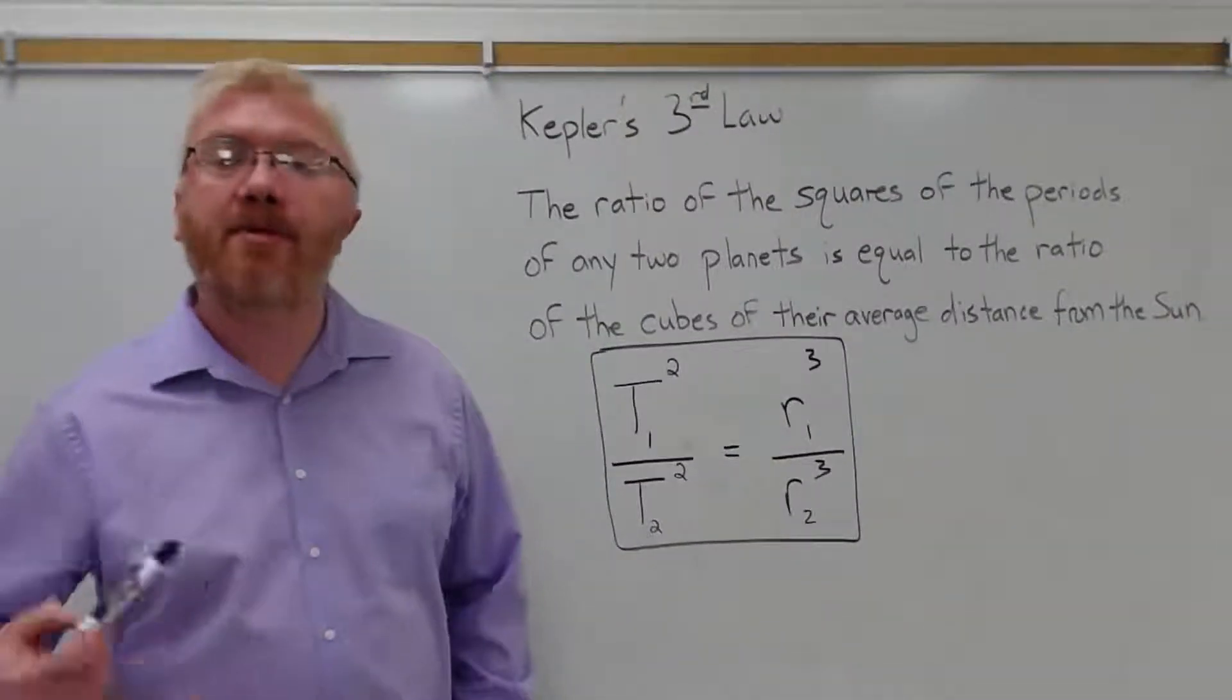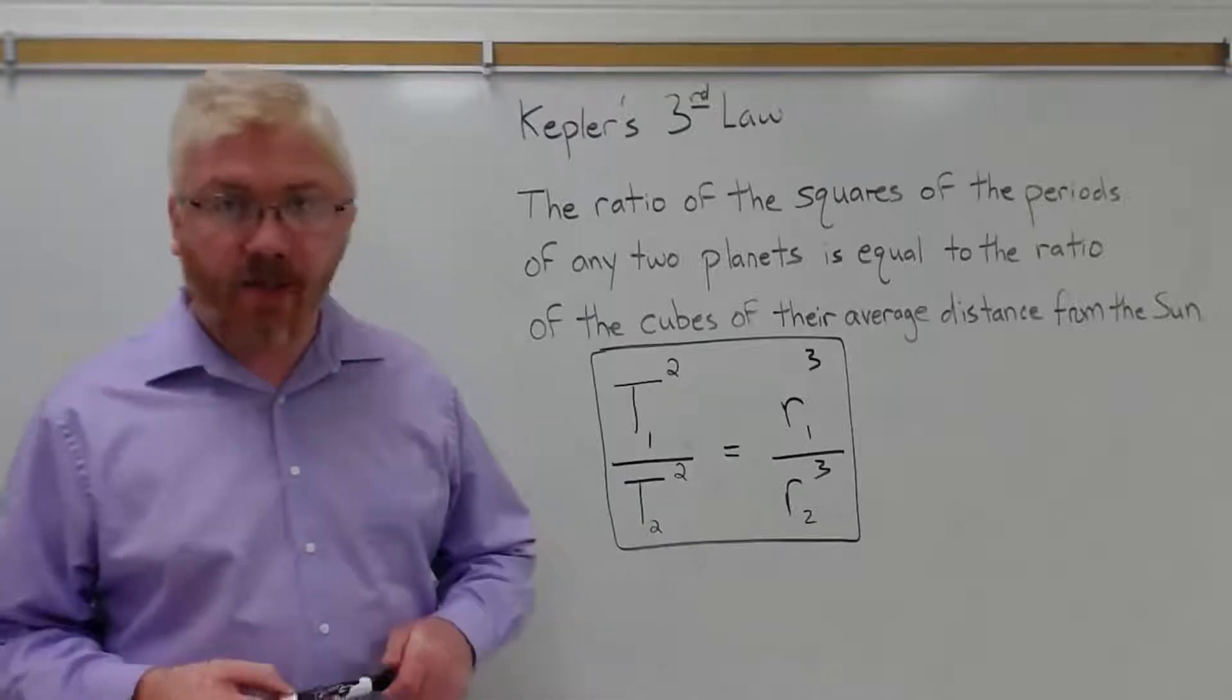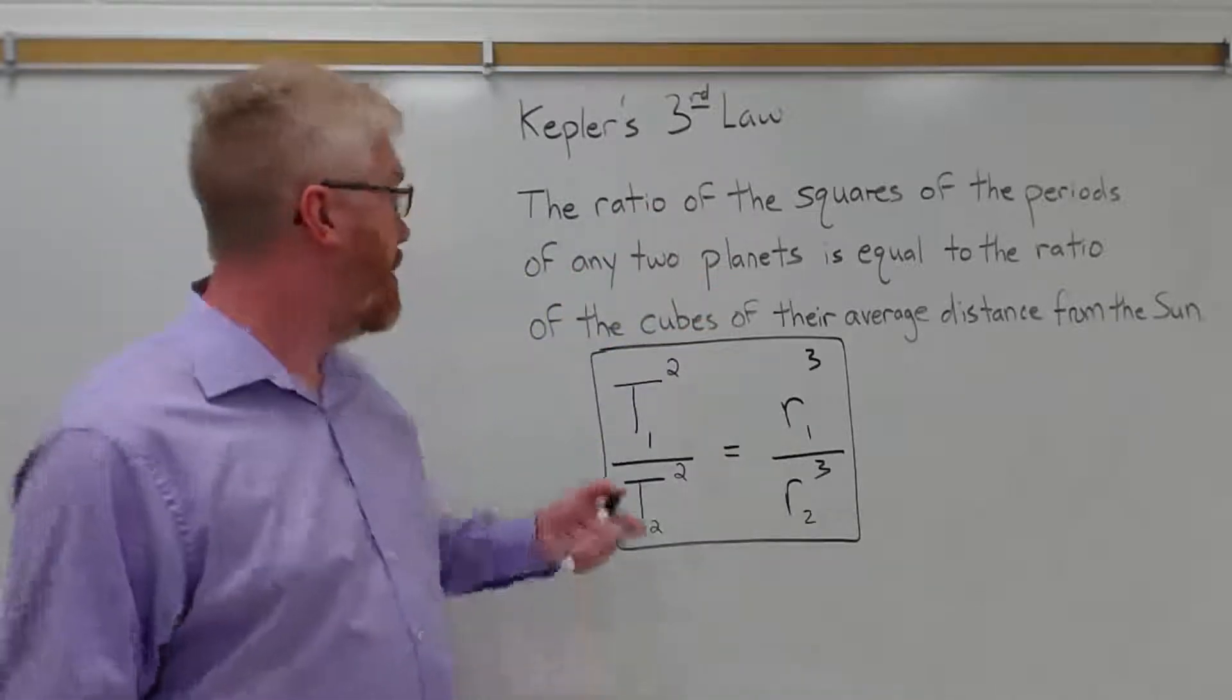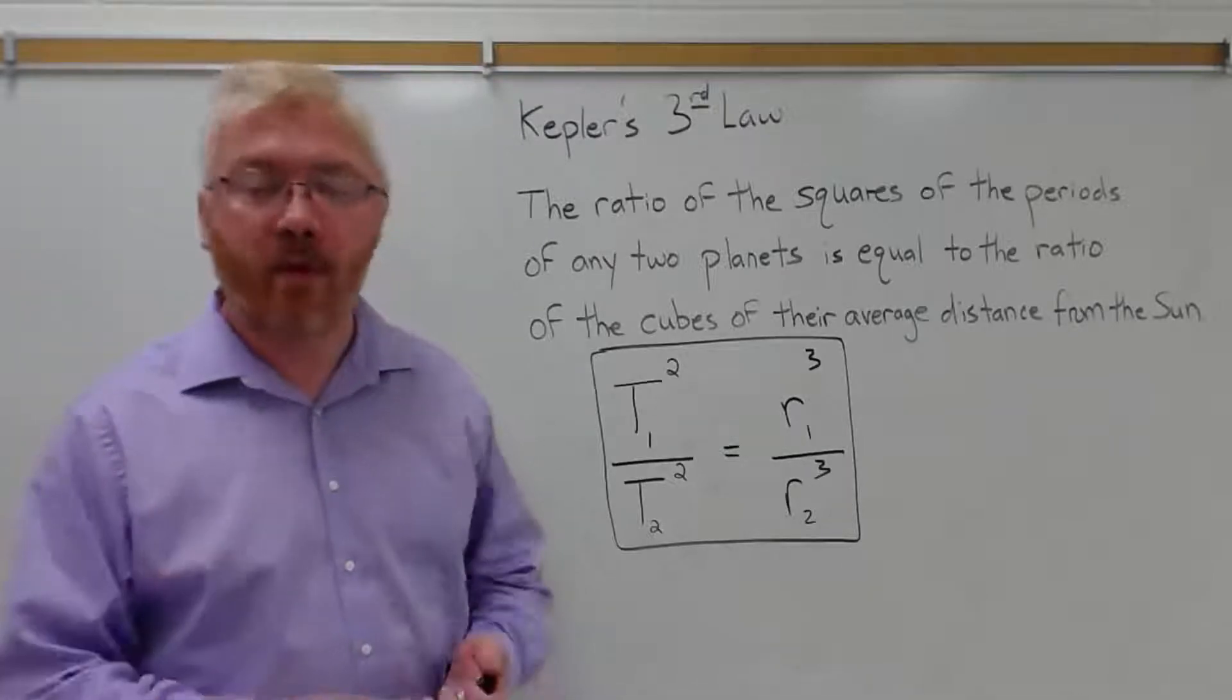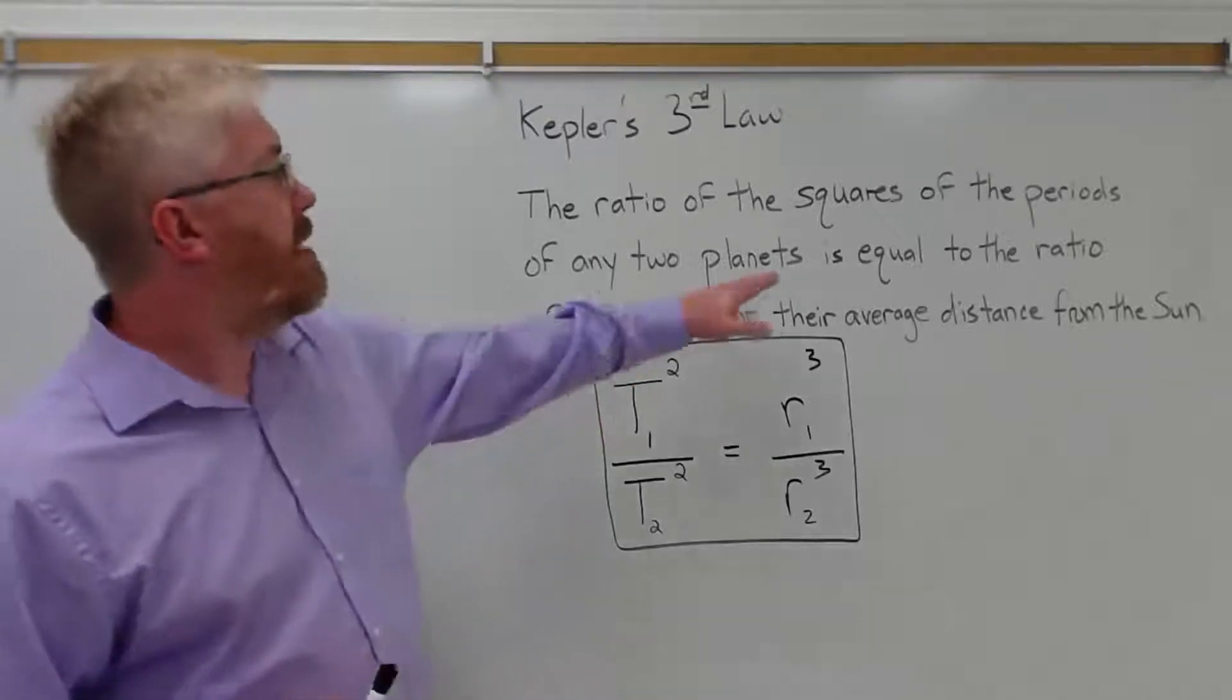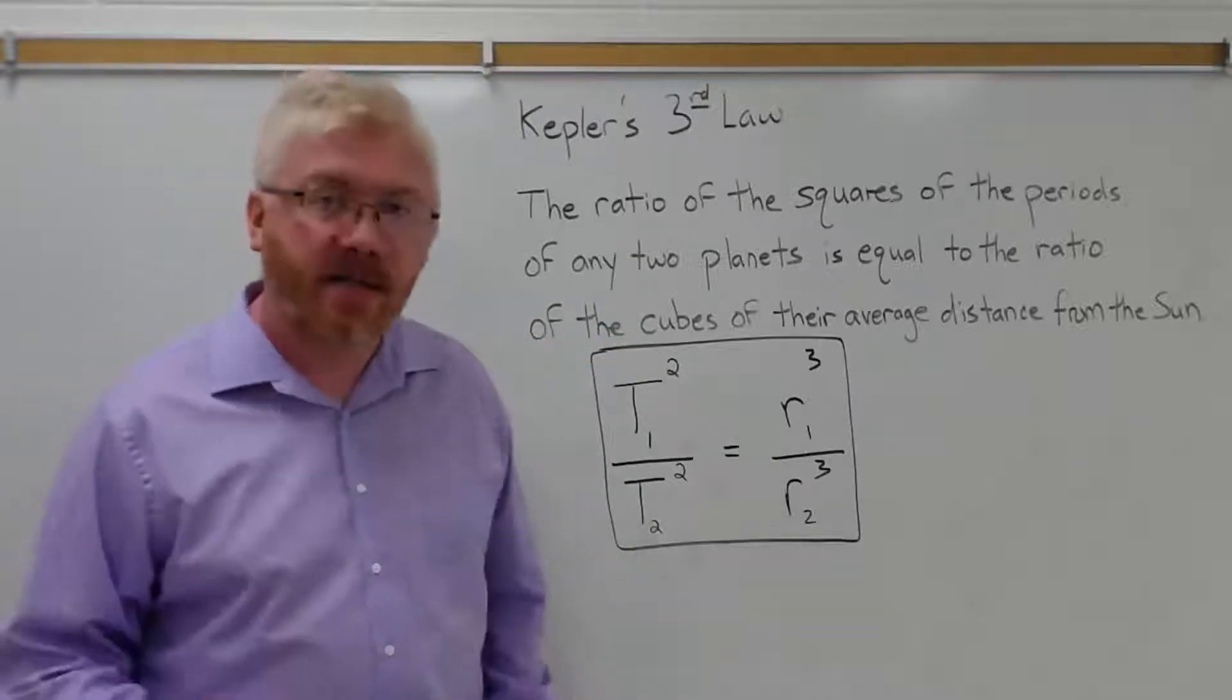And finally, we come to Kepler's third law, the period-semi-major axis rule. Kepler's third law states the ratio of the squares of the periods of any two planets. The period is how long does it take to go around the Sun, the period of orbit. So for Earth, that's one year. For Mercury, it's about 88 days.